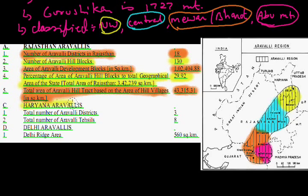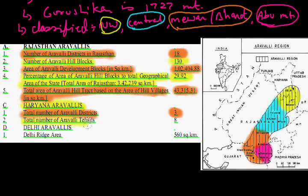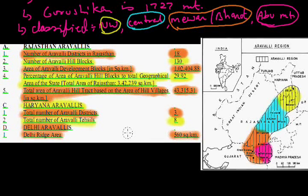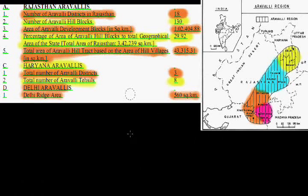A maximum part of the Aravali also comes in Haryana. The total number of districts in Haryana that fall in the Aravali is 3 districts, and 8 tehsils of Haryana come within the Aravali ranges. As mentioned, it is spread till Delhi also, and the Delhi ridge area of Aravali is 560 square kilometers. This is how we complete the Aravali part of Rajasthan.